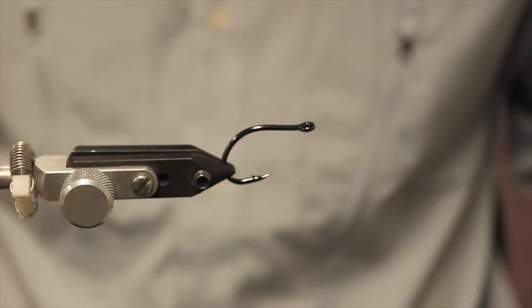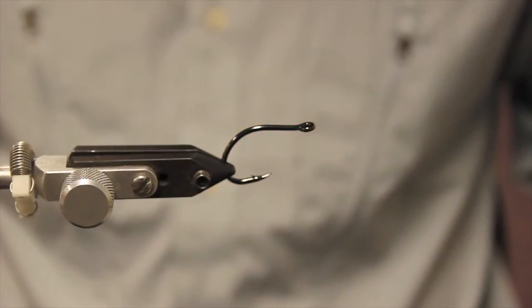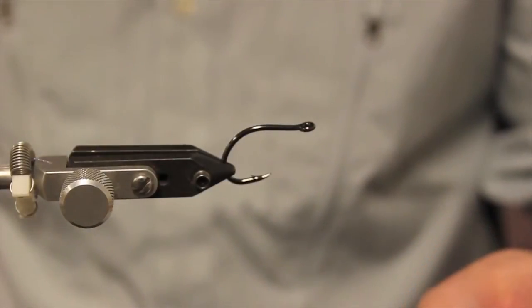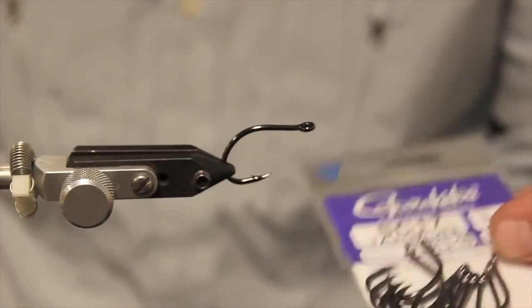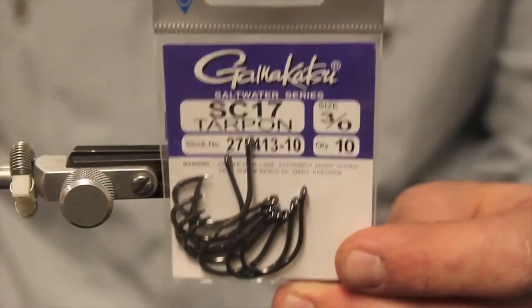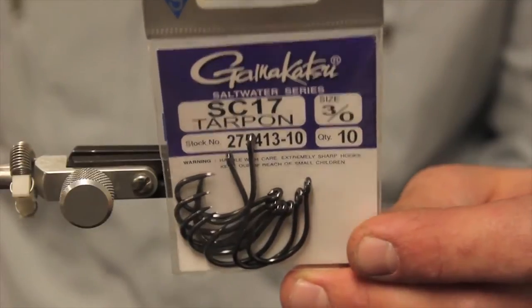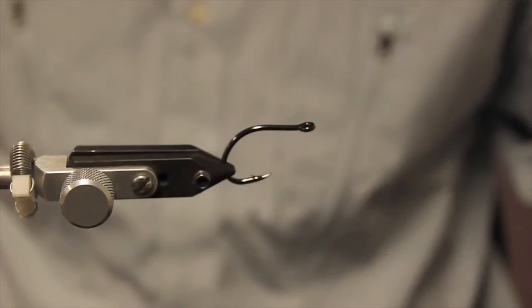But this one's tied on a 3-0 tarpon hook, and it uses some new material that we just got in last year. So this is a Gamagatsu 3-0 tarpon hook. It's a little bit heavier hook. I like the heavier hook. Gives it a little extra weight.